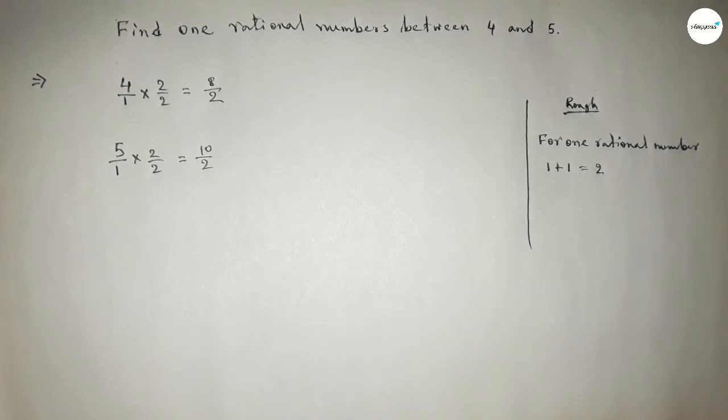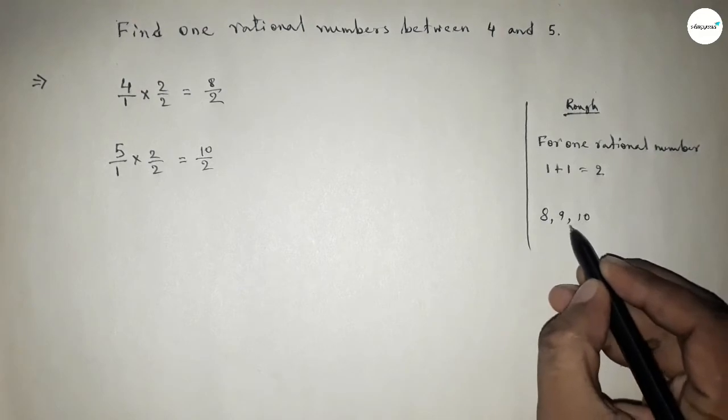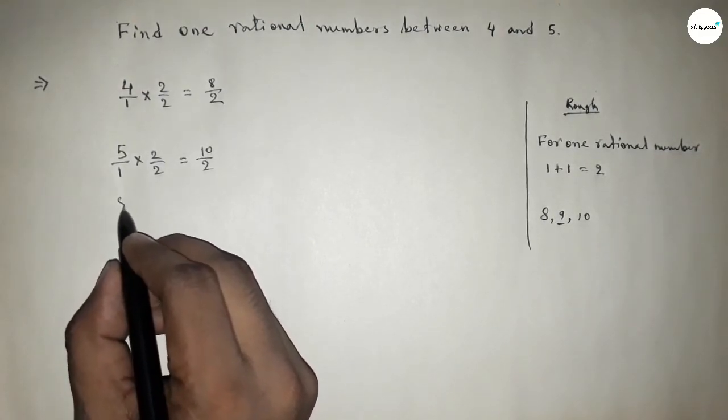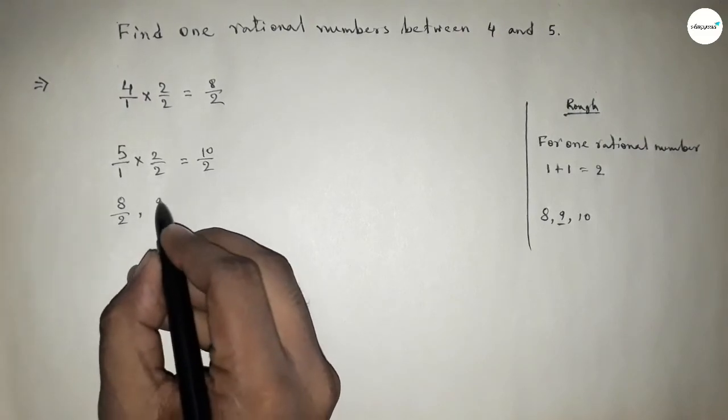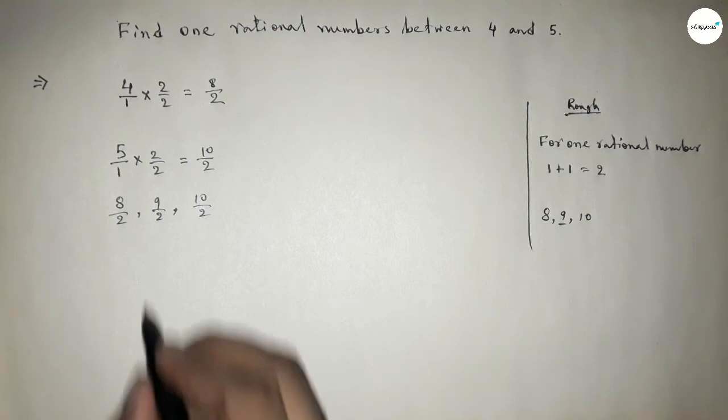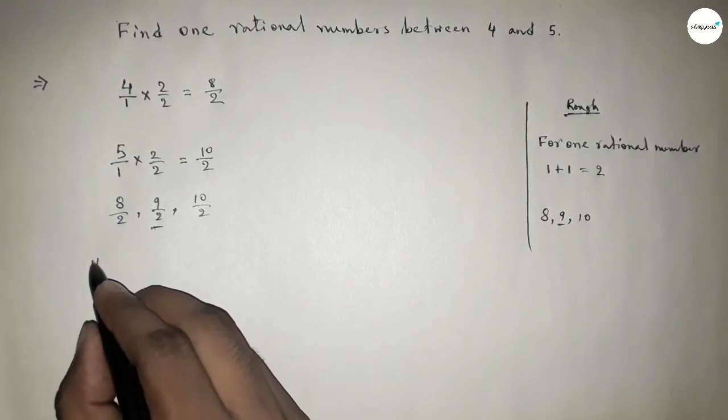And by this number we can form a rational number. Now 8/2, 9/2, 10/2, and this is the required rational number between 4 and 5.